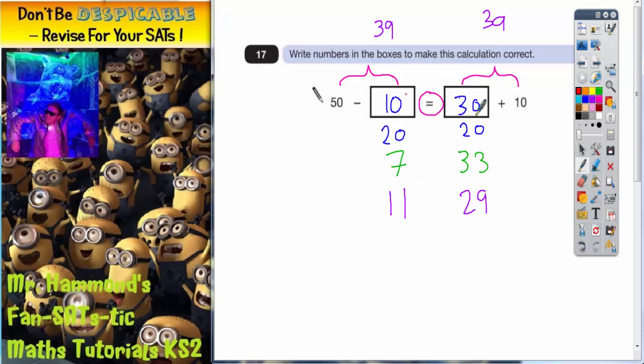10 plus 30 makes 40. 20 plus 20 makes 40. 7 plus 33 makes 40. 11 plus 29 makes 40. So you could put any numbers in here as long as when they are added together it makes 40.